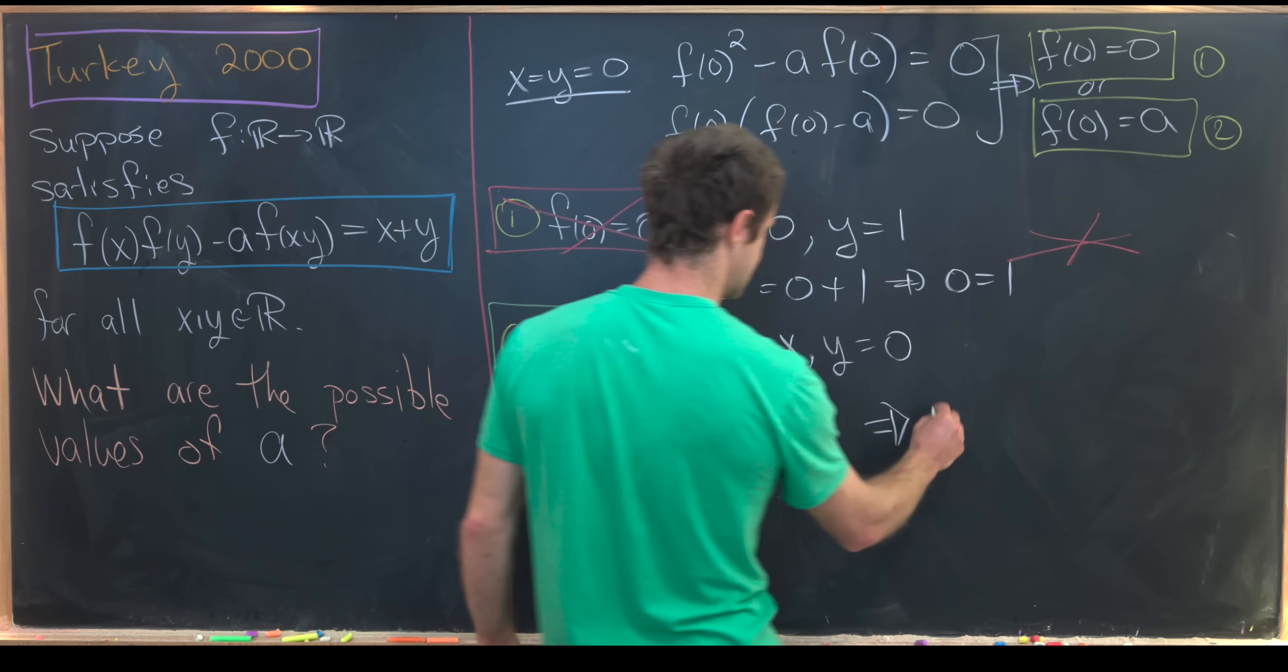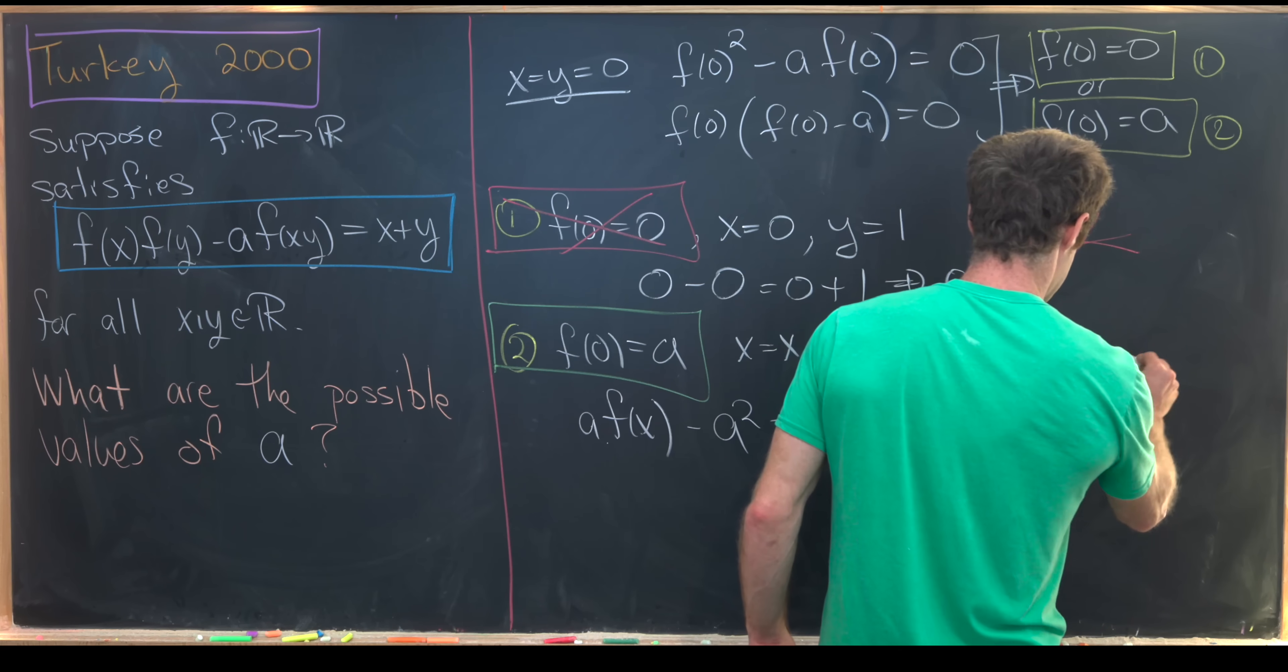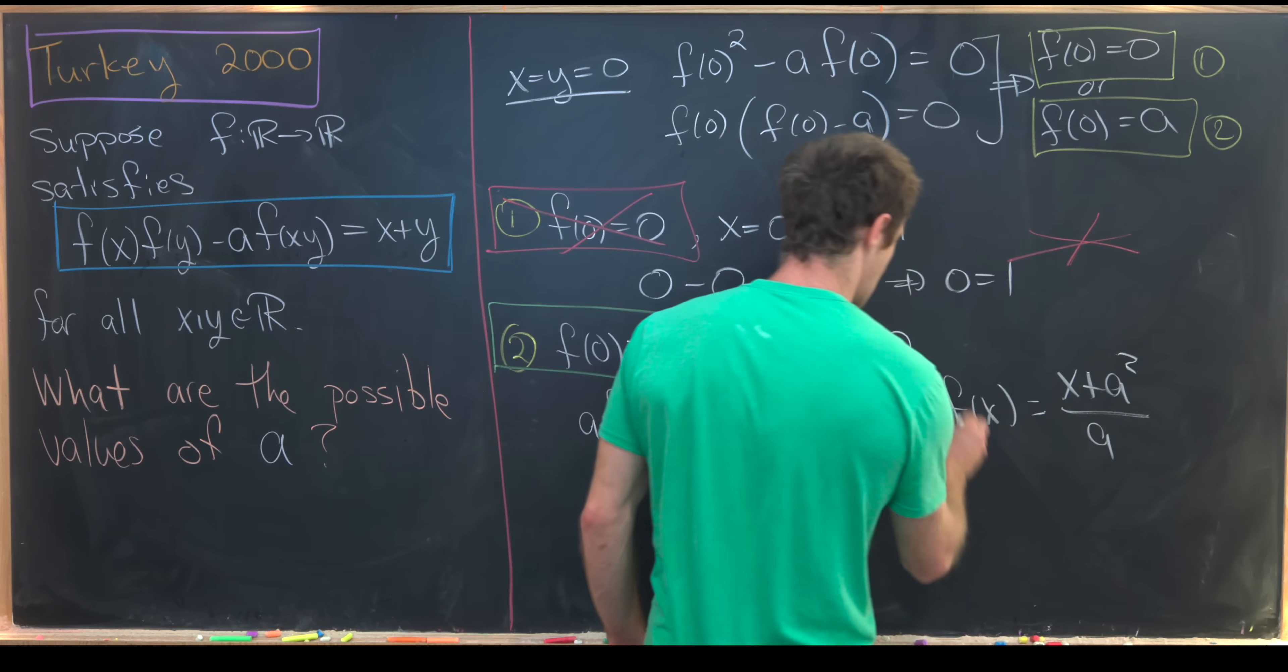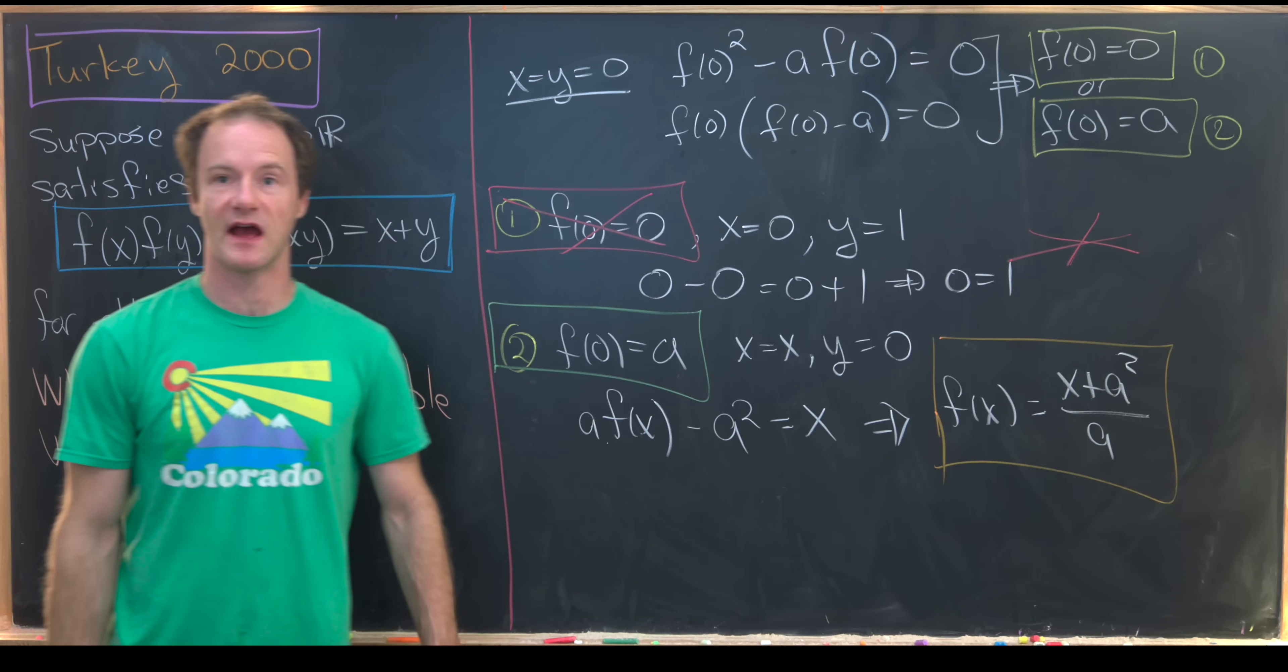So notice we've got this equation that can easily be solved for f(x). So doing that, we see that f(x) is equal to (x + a^2)/a. We've got a nice closed form equation for f(x).